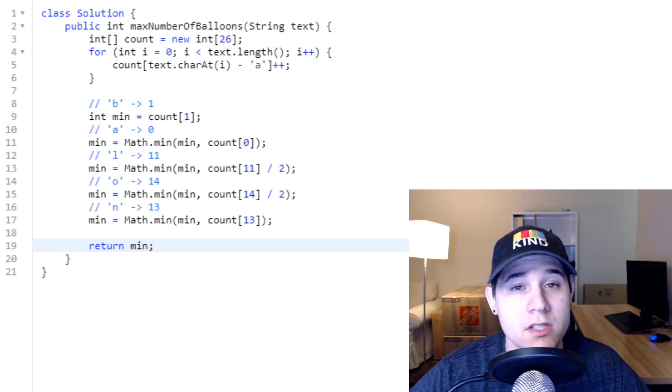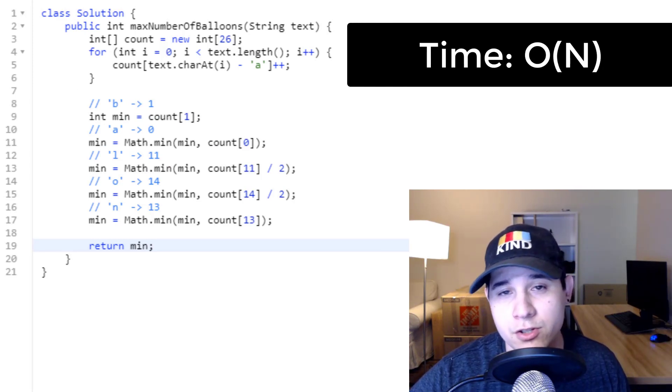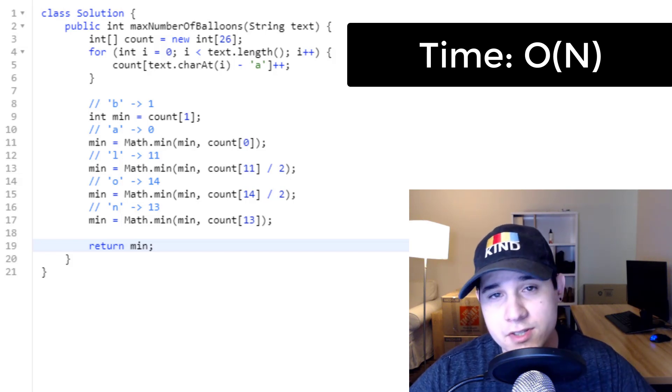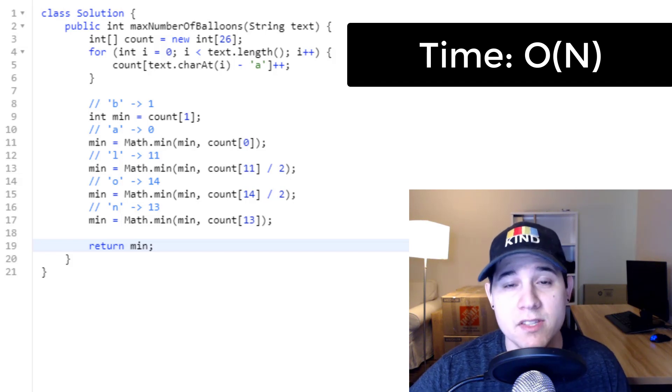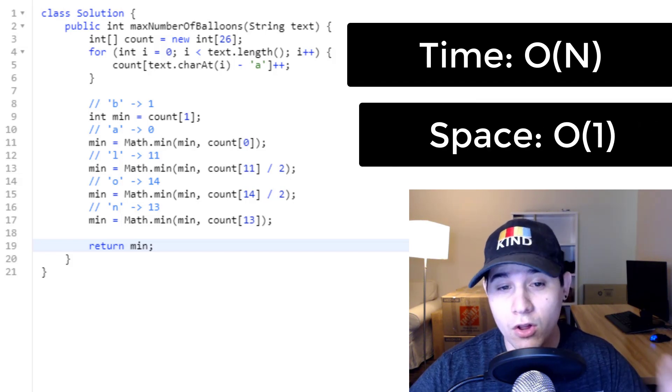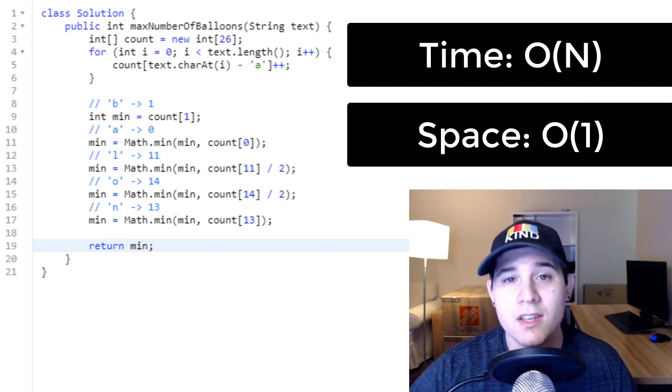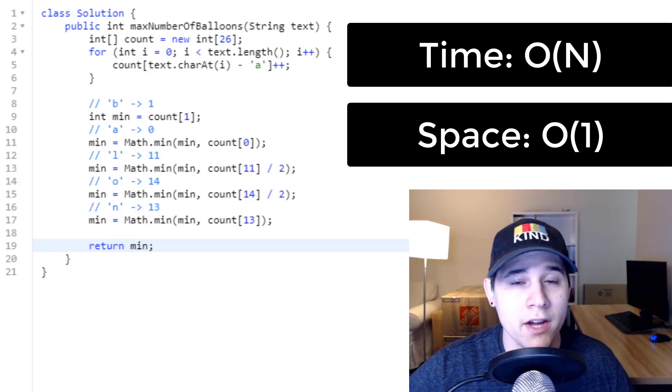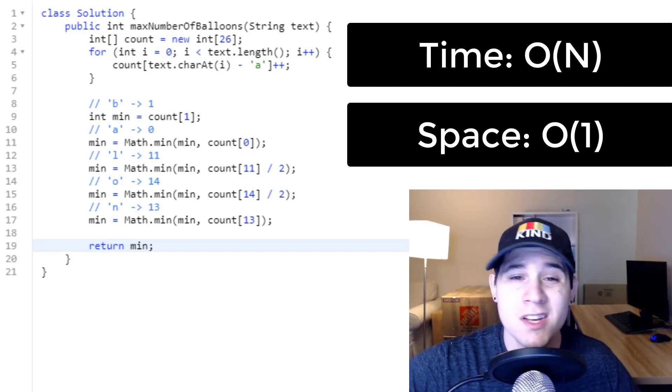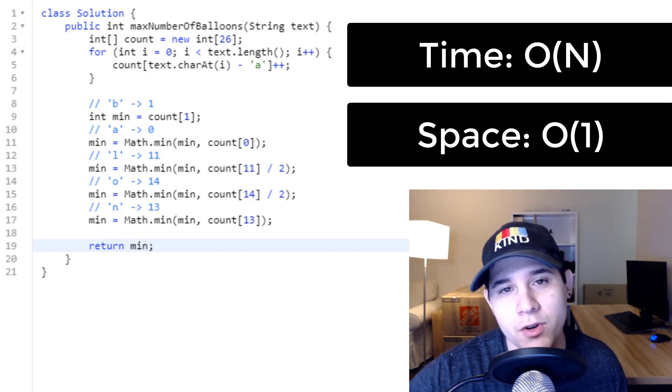The time complexity of our solution is going to be O(N), where N is the number of characters we have in our input string. We have to loop over every single character and count the number of occurrences. And as for our space complexity, it's actually constant. Although we are initializing an integer array on line three, it is always going to be of size 26. So no matter if our input string grows to be a million in length, it wouldn't matter because it's not going to affect the amount of memory that we initialize.